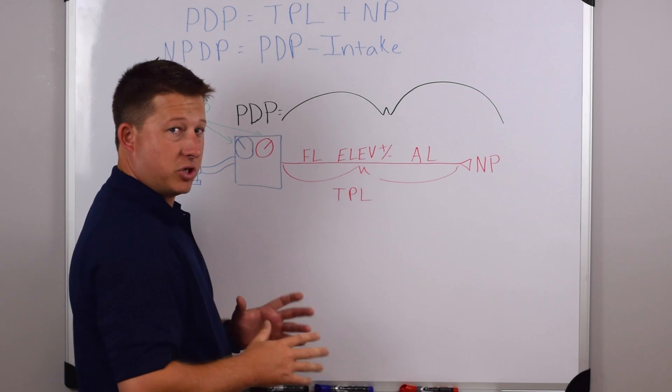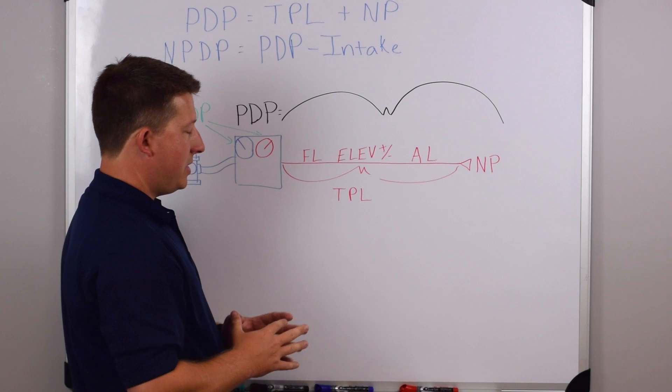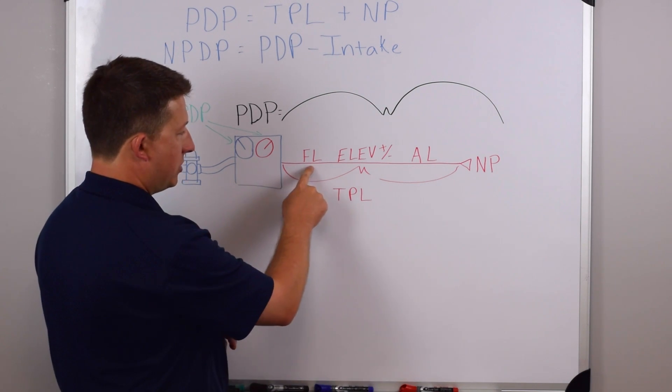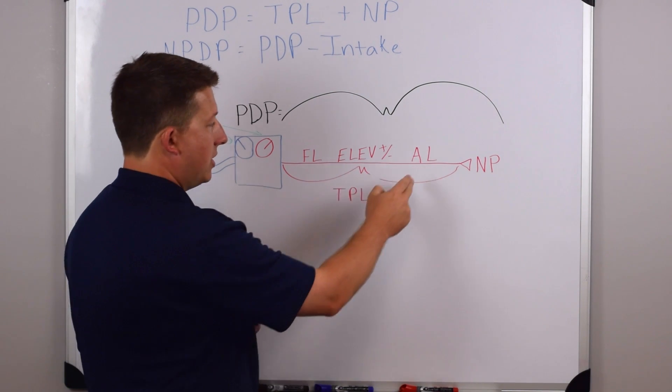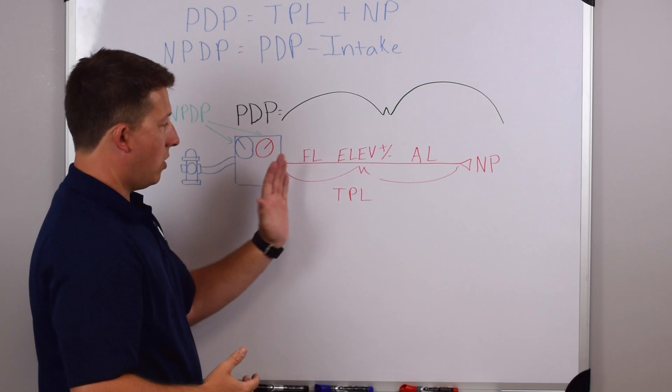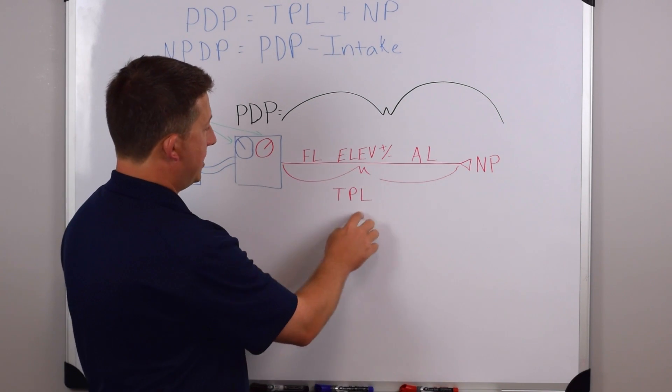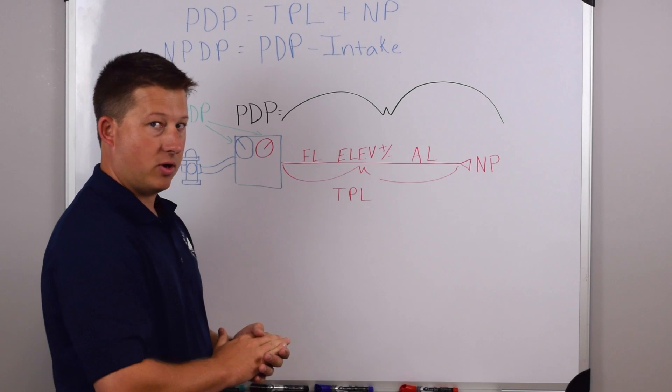Inside of total pressure loss, or TPL, is going to be the friction loss, the elevation gain or loss, and the appliance loss. All of those different things add together to form up TPL, or total pressure loss.